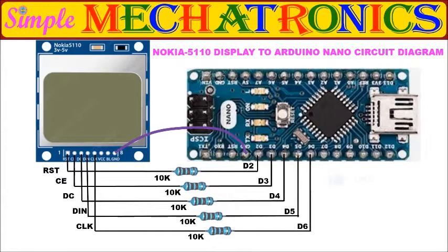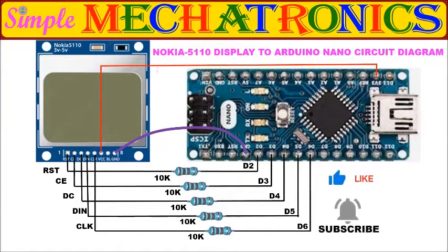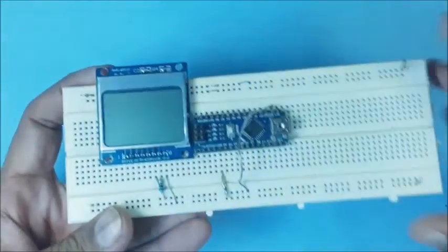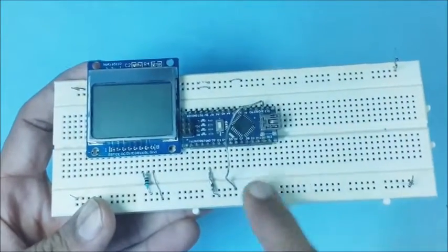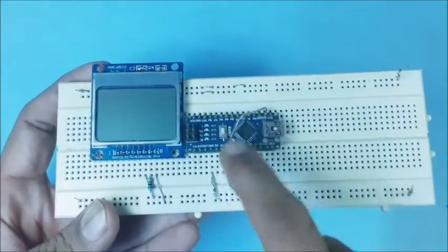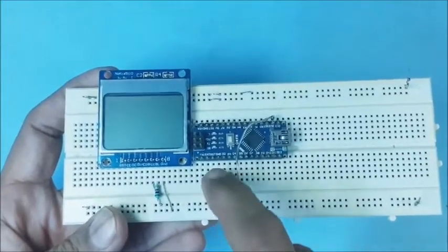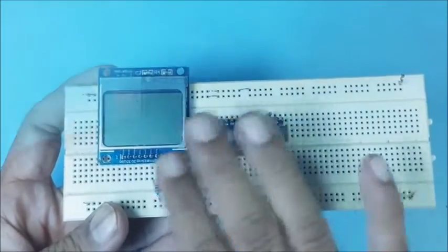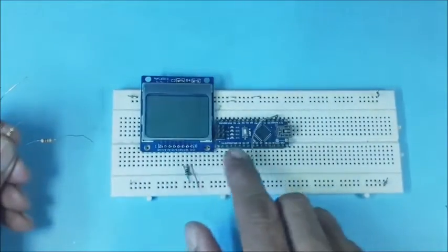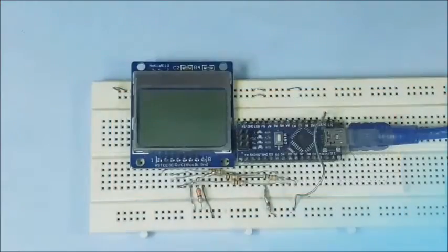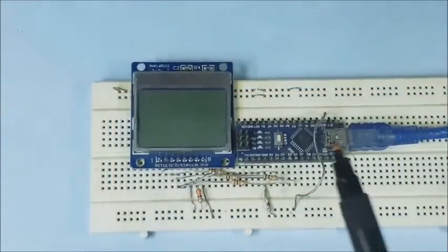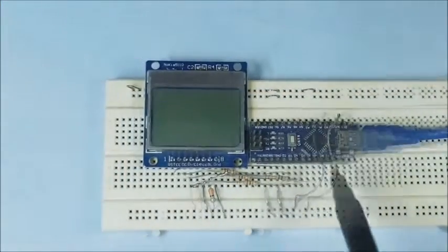The ground pins are connected. Then VCC pin is connected to 3.3 volts, and the backlight pin is connected through a resistor. This is the 3.3 volt line to VCC and to backlight through 330 ohms. This is the ground line. Now the power supply to Nokia 5110 is ready. The 10k resistors are used for signal lines.